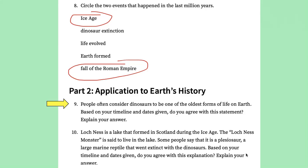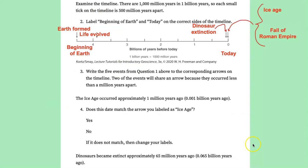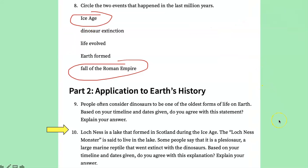So people often consider dinosaurs to be one of the oldest forms of life on Earth. Based on the timeline and the dates that are given, do you agree with this statement? So I'm going back to that picture and show you here's life evolving. Here's dinosaur extinction and dinosaurs came on the scene about here. You can see where my arrow is. Just this little bit of time here is where we had dinosaurs. So definitely not the oldest life forms by a long shot.